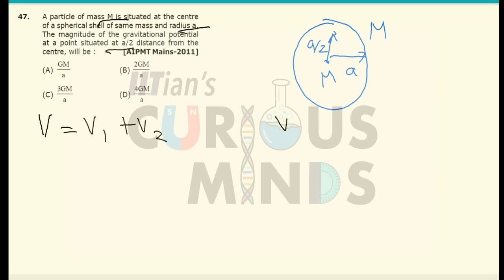Now let us first find out for the shell. For any point inside the shell, the gravitational potential is equal to minus GM divided by A for any point inside the shell.